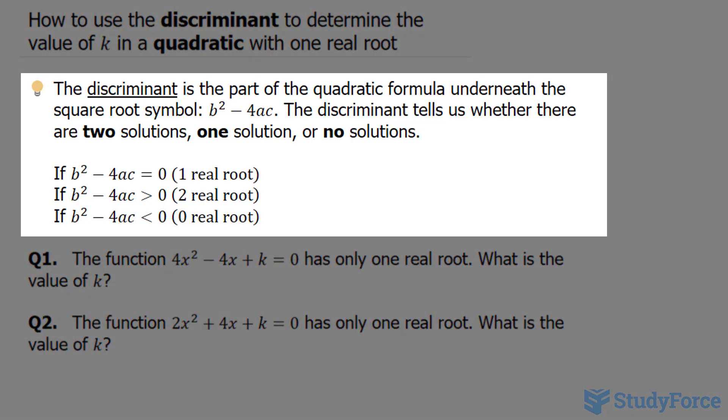I want to start with a quick definition. The discriminant is the part of the quadratic formula underneath the square root symbol, and it looks like this.